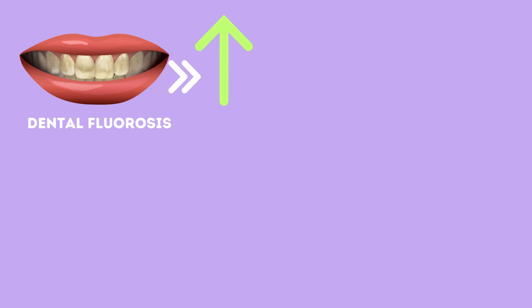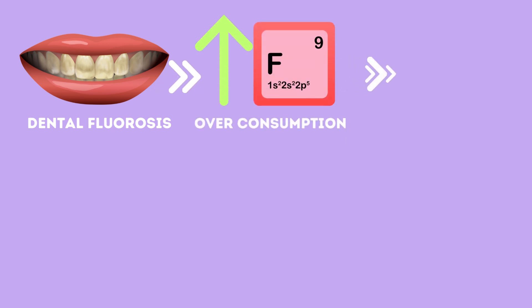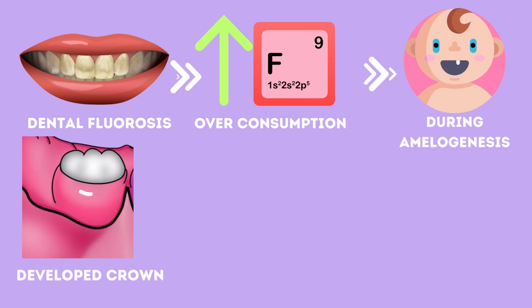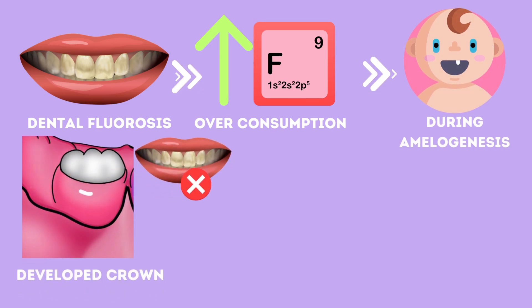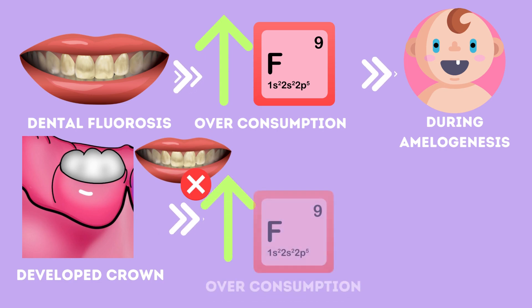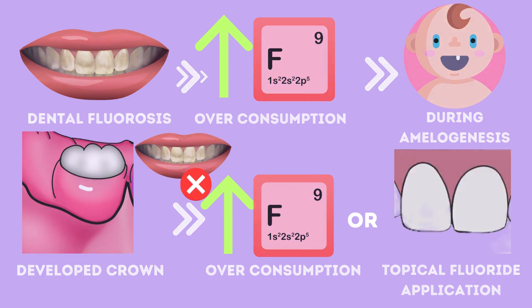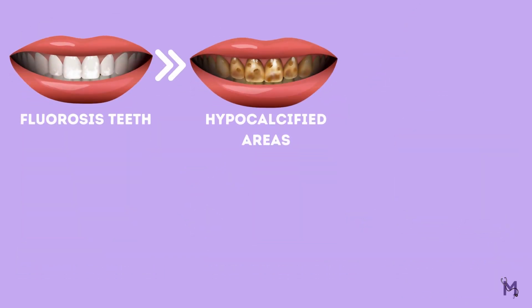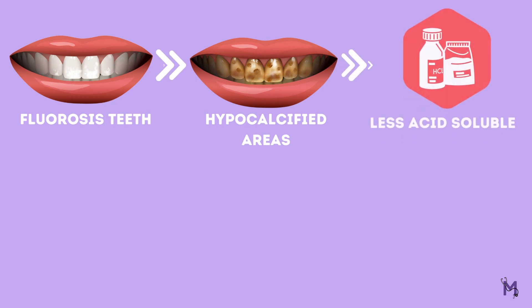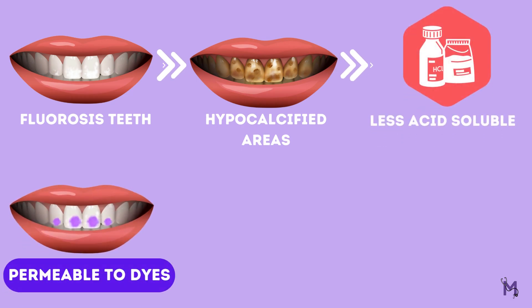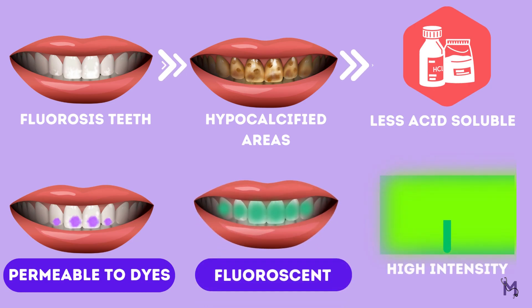Remember that dental fluorosis is a developmental phenomenon that occurs due to excessive fluoride consumption only during amelogenesis. Once the crowns of the teeth are formed, no further fluorosis can be induced by additional intake of fluoride or even by post-eruptive topical fluoride application. In these fluorosed teeth, the hypercalcified areas of the mottled enamel are less soluble in acids, have a greater permeability to dyes and emit fluorescence of higher intensity than normal enamel.